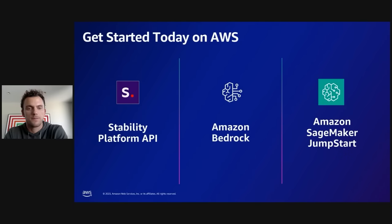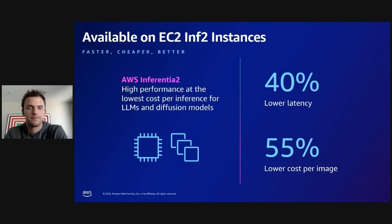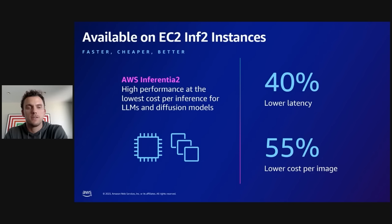Amazon SageMaker is a great option for customers looking for more control over their models. Our models in Bedrock and SageMaker are also available on EC2 Inf2 instances, which provide 40% lower latency and 55% lower cost per image.